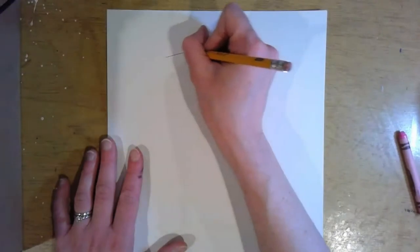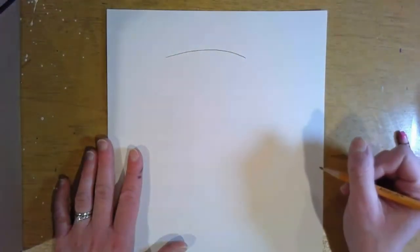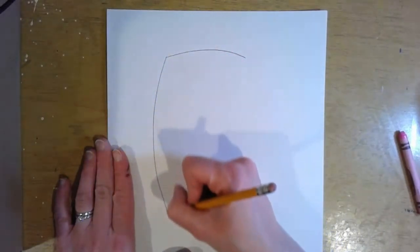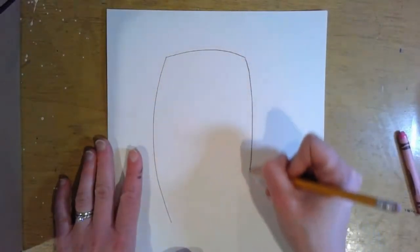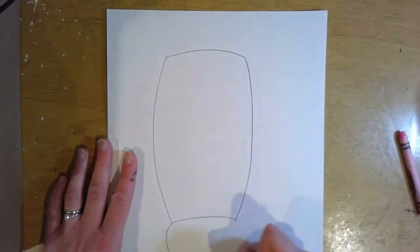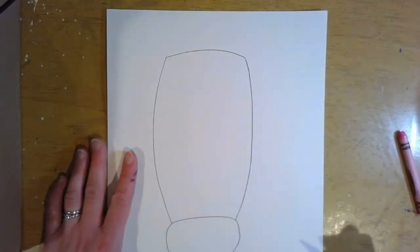At the very top we're going to draw a sort of straight but a little bit curvy line across, and then two lines that curve in down. And then at the very bottom I'm going to add an oval for the snout.